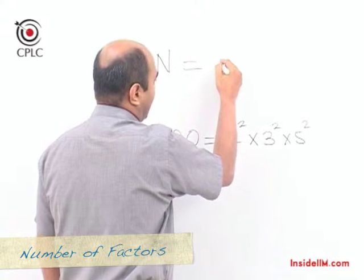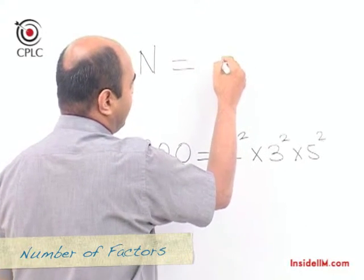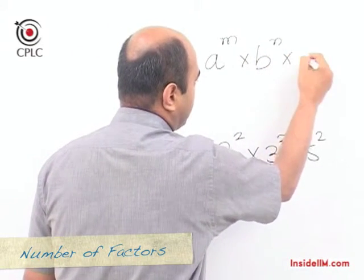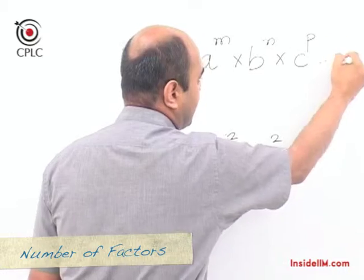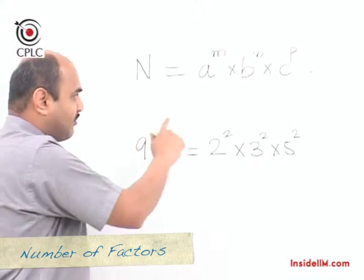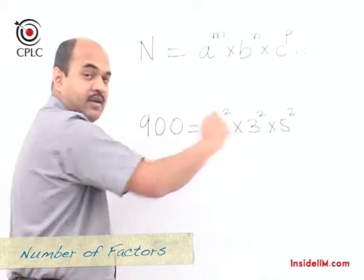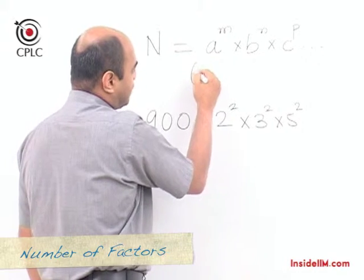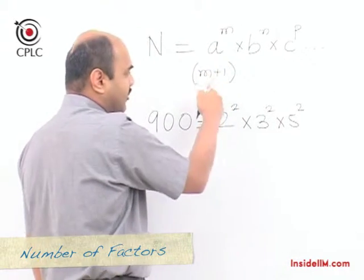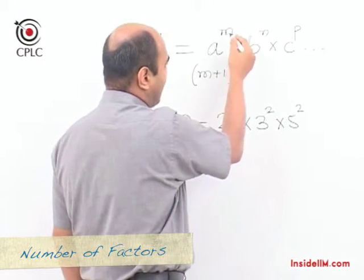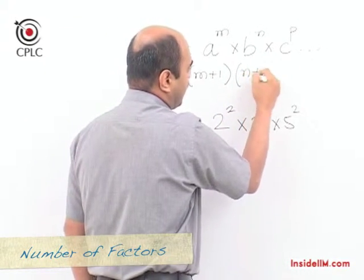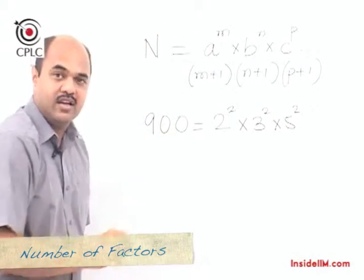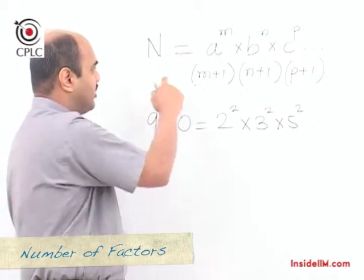The first step in calculating the number of factors is to write the given number N as a product of prime factors: A raised to M, multiplied by B raised to N, multiplied by C raised to P, and so on. After splitting the number into prime factors, the next step is to increase the power of each prime factor by 1 — add 1 to M, add 1 to N, and add 1 to P. This product gives the number of factors for N.